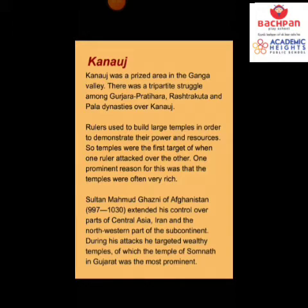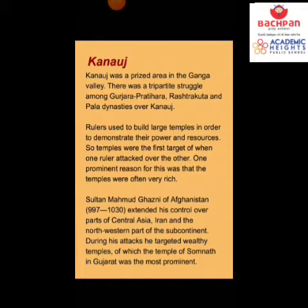Sultan Muhammad of Ghazni from Afghanistan extended his control over parts of Central Asia, Iran, and the north-western part of the subcontinent. During his attacks, he targeted wealthy temples, of which the temple of Somnath in Gujarat was the most prominent.